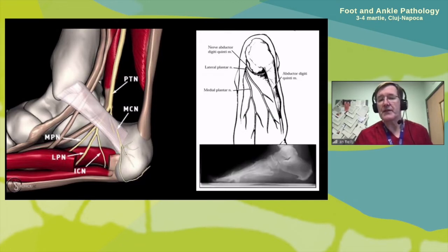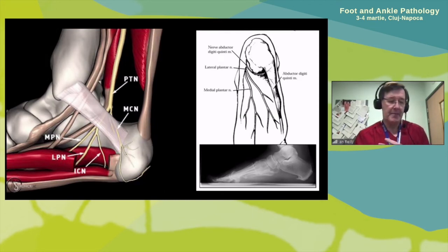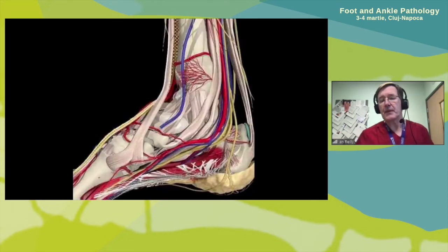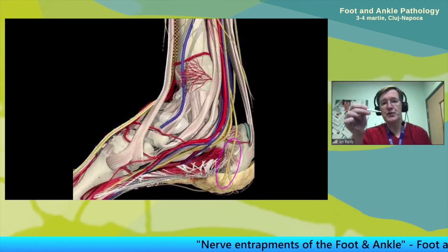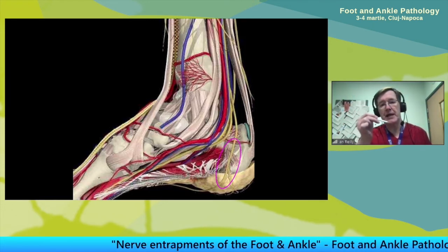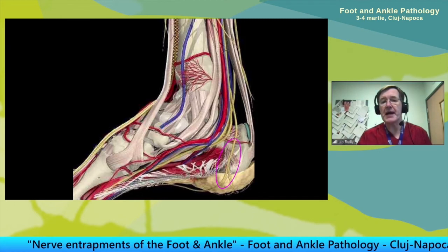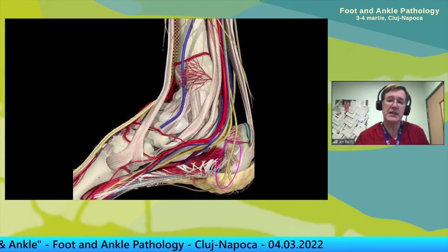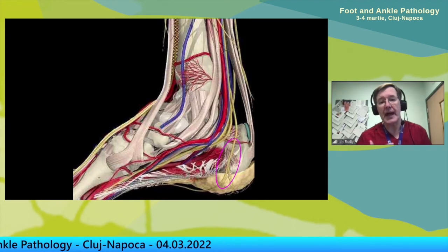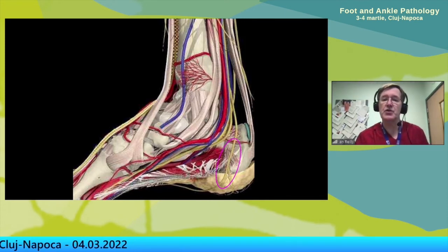If I see a heel spur and plantar lateral neuralgic symptoms, I'll be thinking Baxter's nerve. Treatment again would be insoles, orthotics, high-volume injections, and ultimately surgery. Less common would be an isolated entrapment of the medial calcaneal nerve — the first branch to come off the tibial nerve. It becomes superficial very quickly, superior to the laciniate ligament, so it's often spared in cases of tarsal tunnel syndrome. Isolated irritation of the medial calcaneal nerve is rare but you will see the odd one if you see a lot of heel pain, and it can complicate bad cases of plantar fasciitis.